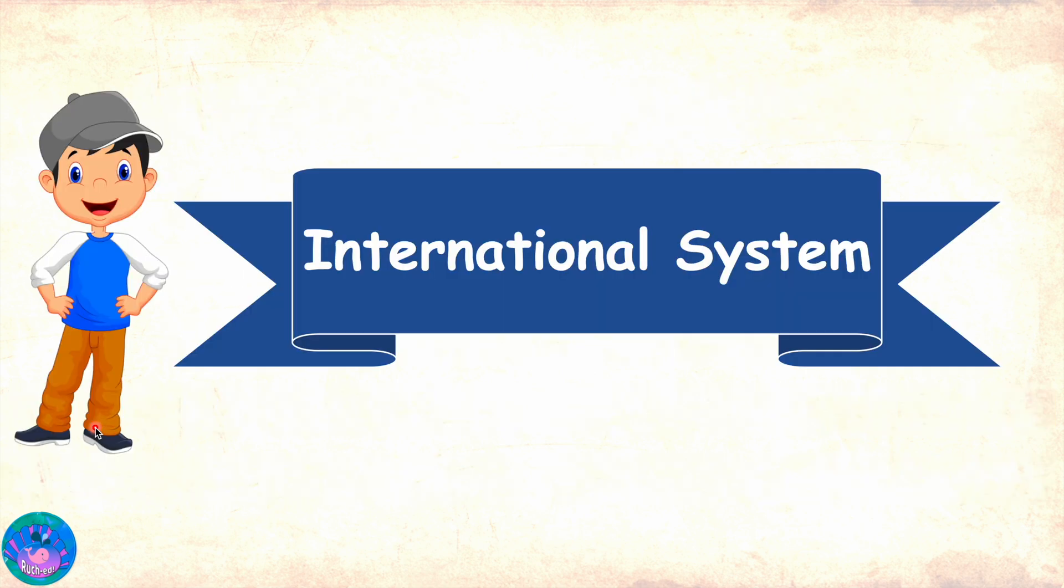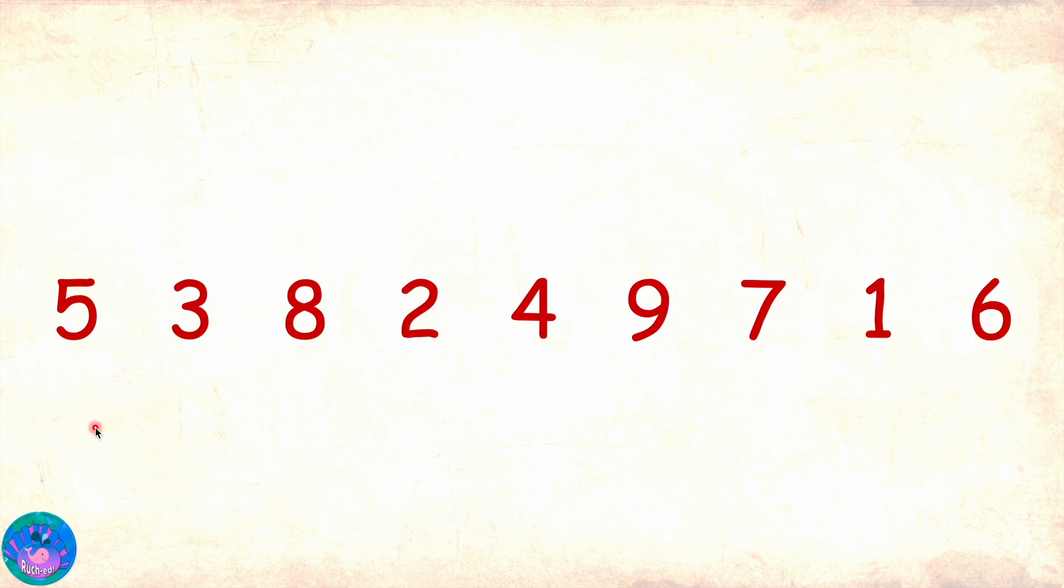In this class, we will learn the international system of reading and writing numbers and will focus on the Indian system in the next class. Let's take a nine-digit number. We will later discuss numbers with more than nine digits. We already know that the rightmost digit is in the ones place. Then we have tens, hundreds, thousands, and ten-thousands.